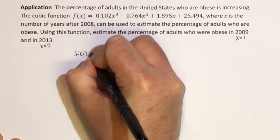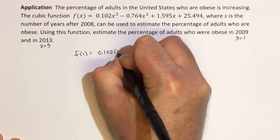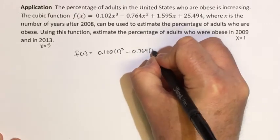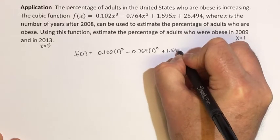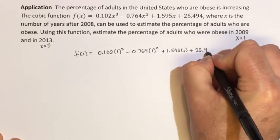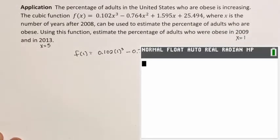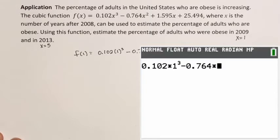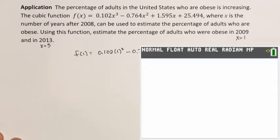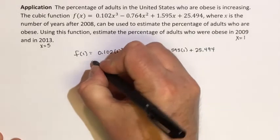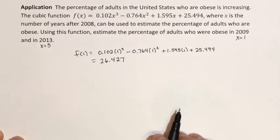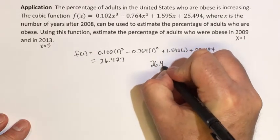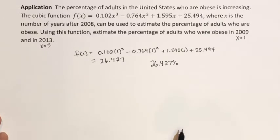So if we find f(1), that's going to be 0.102 times 1 cubed minus 0.764 times 1 squared plus 1.595 times 1 plus 25.494. That equals 26.427. So we would estimate that about 26.427 percent of adult Americans were obese in the year 2009.